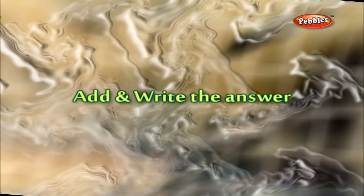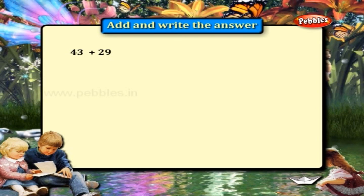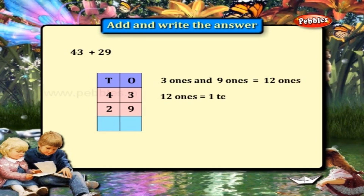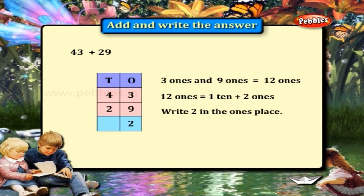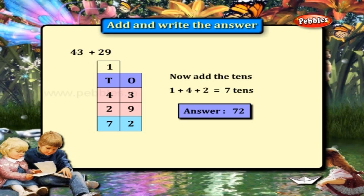Add and write the answer. 43 plus 29. Add 3 ones and 9 ones — we get 12 ones. Change 12 ones to 1 ten and 2 ones. Write 2 in the ones place and carry 1 to the 10's place. Now add the 10's: 1 plus 4 plus 2 is equal to 7. So 72 is the answer.